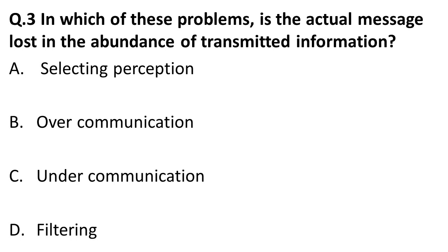The next question: in which of these problems is the actual message lost in an abundance of transmitted information? When information passed is too much — more than what is required — the original message gets lost in a jungle of messages. This is called over communication. When information provided is very little and you cannot draw a conclusion, that is called under communication.